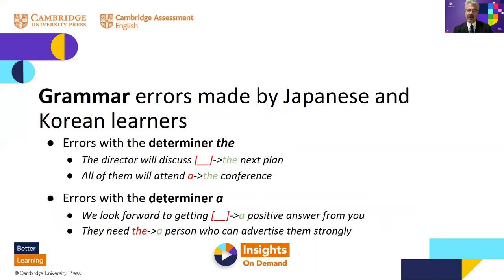Common grammar errors are also widespread. The determiner or article 'the' and 'a' cause a lot of problems across all levels. Sometimes articles are missing — 'the director will discuss the next plan' or 'we look forward to getting a positive answer from you.' Sometimes articles are confused and switched — 'all of them will attend the conference that/a I was using instead' or 'they need the/a person who can advertise them strongly.'